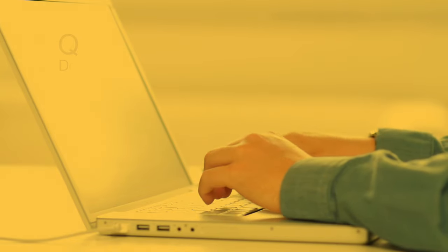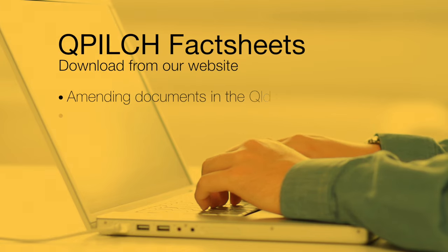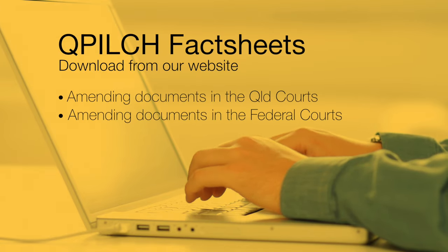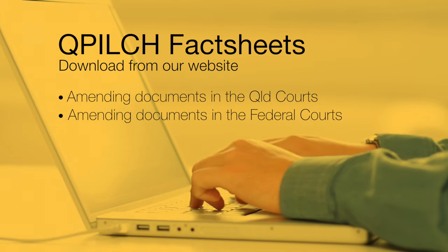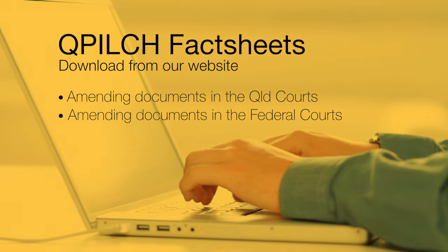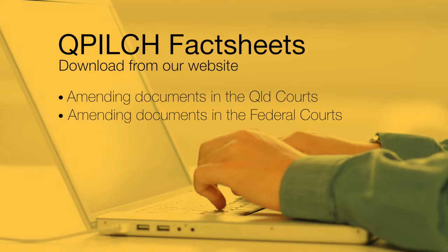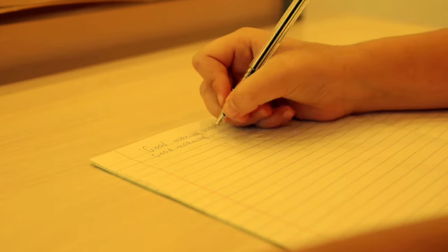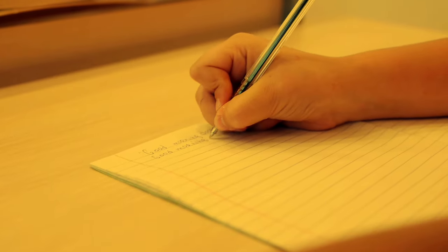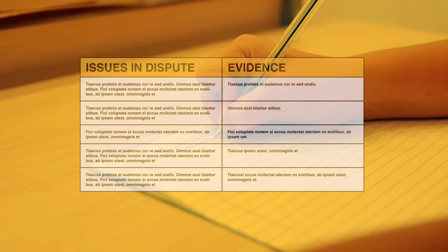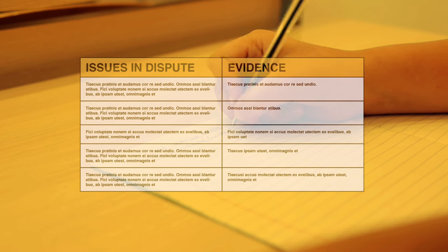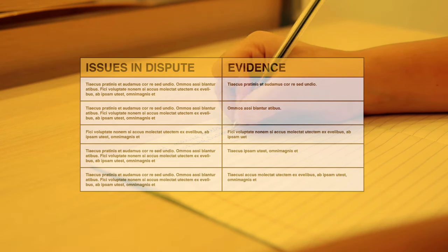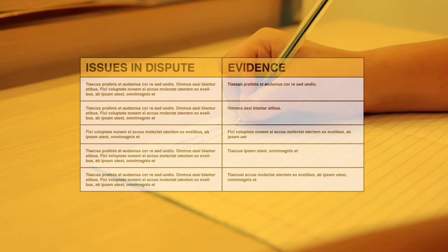If you suddenly realize that you've left something important out from your documents which you now realize is essential luggage, you may need to change your documents. This is called amending and there are special rules about how and when you can do this. For each of the matters which are still in dispute you need to have evidence to prove your arguments. Some of the material facts won't be in dispute anymore, so you'll just need to focus on the evidence for the issues in dispute.